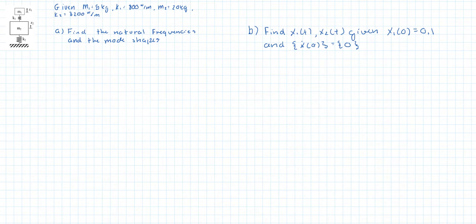In this video we're going to do our third example on the free response of a 2 degree of freedom system. We're given the masses and the stiffness constants and the first part of the problem is to find the natural frequencies and the mode shapes.